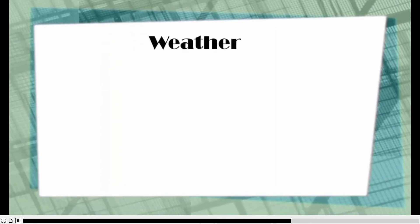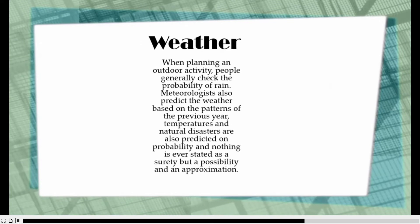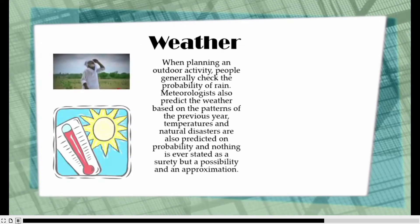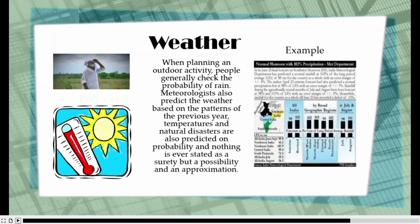Third one: weather. When planning an outdoor activity, people generally check the probability of rain. Meteorologists also predict the weather based on patterns of previous years' temperatures, and natural disasters are also projected based on probability. Nothing is ever stated as a surety, but as a possibility and an approximation.